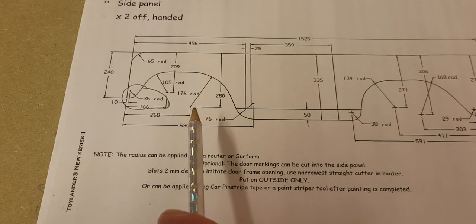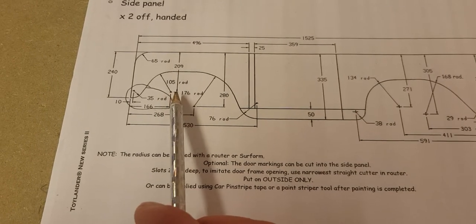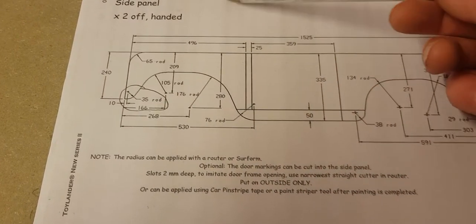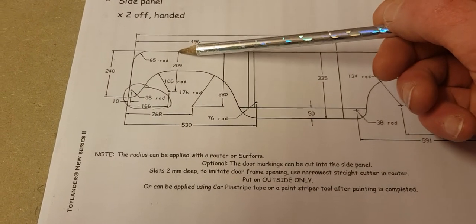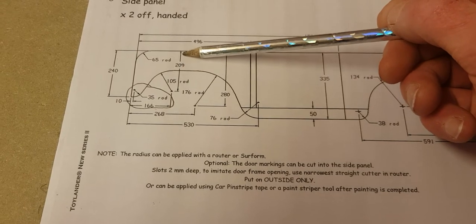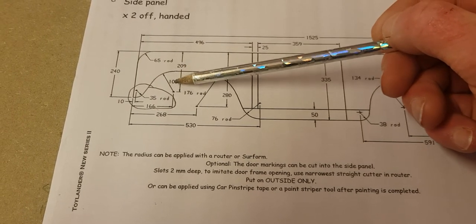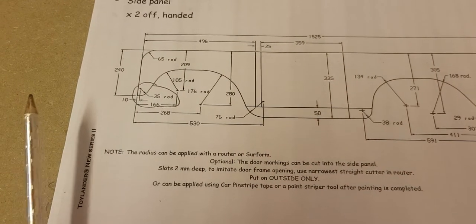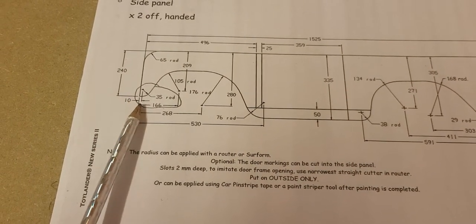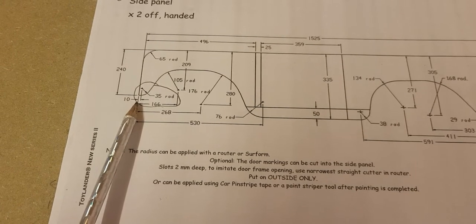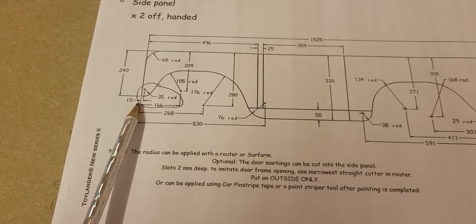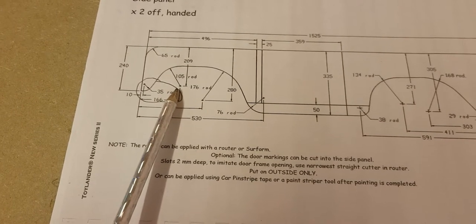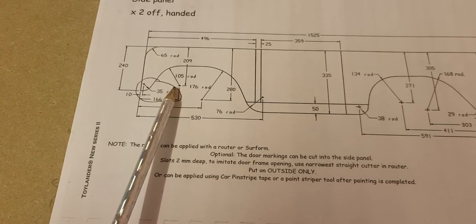So your next one is here. So that measurement is 209mm from the top of the panel to there. And your next measurement is 166mm. Take that from the front of the panel to there. So that gives you that, your second starting point.